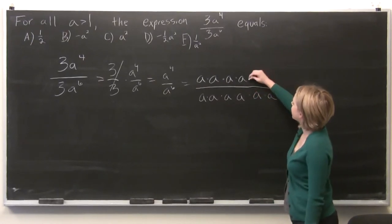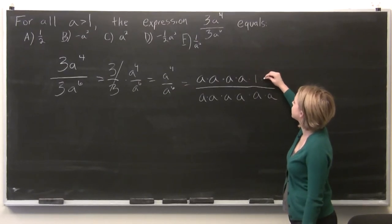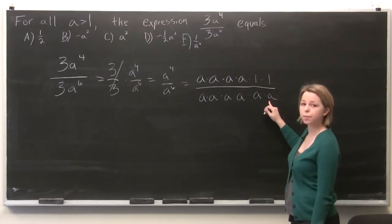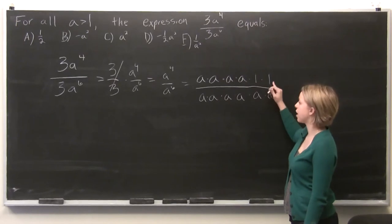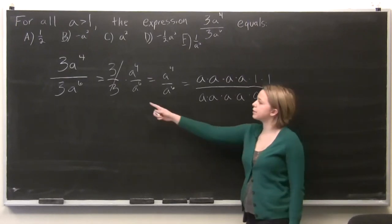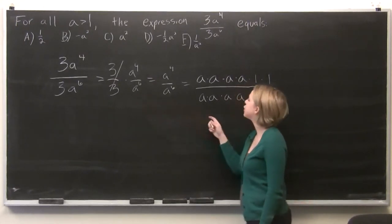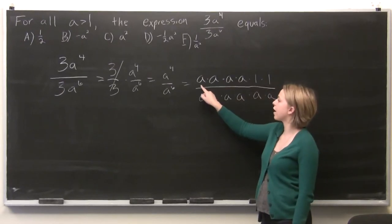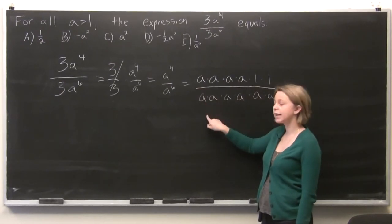And we can add times 1 for each of the a's on the bottom, on the denominator, that don't have a pair. So just like we did for 3 over 3, we know that every time we have a pair of a over a, it's equal to 1.